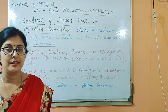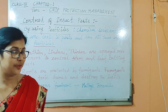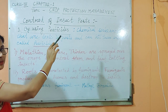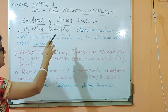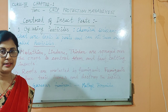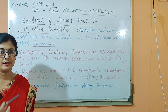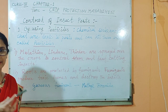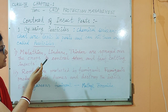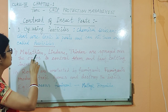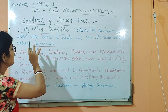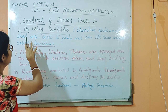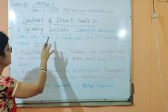Okay, class 9. Our next topic is underground protection management, control of insect pests. In the previous topic, we have learned about insect pests. Now, how we can control the insect pests? Number 1, it is by using pesticides.